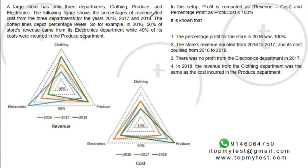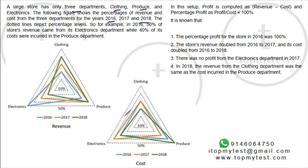This is a straightforward question from CAT 2019 Slot 2 — one of the easiest questions in that set. It's a calculation and ratios question. A large store has only three departments: clothing, produce, and electronics. The following figure shows the percentage of revenues and costs from the three departments for 2016, 2017, and 2018.